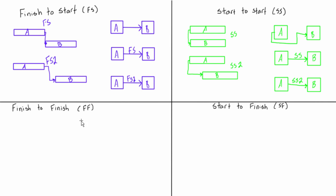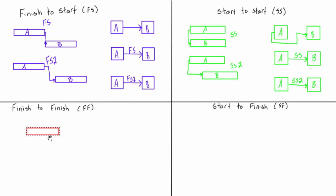The next one is finish to finish relationships. A finish to finish relationship, if B depends on A, means that B can finish when A finishes. It's not as intuitive as the finish to start, but let's draw what the Gantt chart representation would look like. We'd have activity A and activity B — let's make B a little bit shorter. The start date of B isn't so important; it's the end date. B can start wherever it wants as long as it finishes when A finishes. That's the restriction here, and our connecting arrow would just look like that.